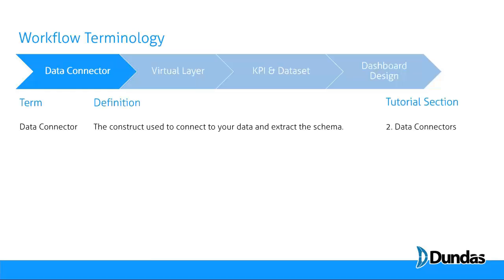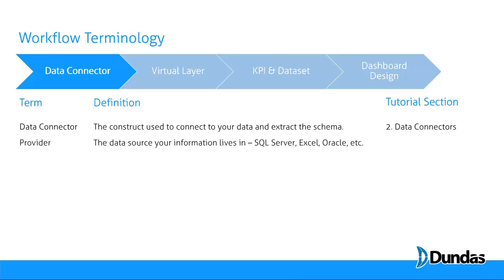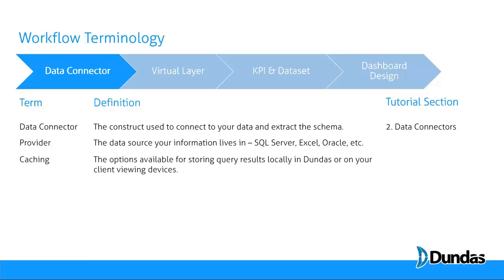With regard to the data connector, a data connector is a construct inside Dundas Dashboard used to connect your data and extract the schema. You'll learn all about these in Section 2. Basically, these are named connections to your providers that Dundas can reference again and again — knowing where the data lives and how to access it — allowing your developers to build dashboards on top of it. The provider is simply the data source you're connecting to. You'll need to know its name, where it lives, and all of the appropriate access credentials.